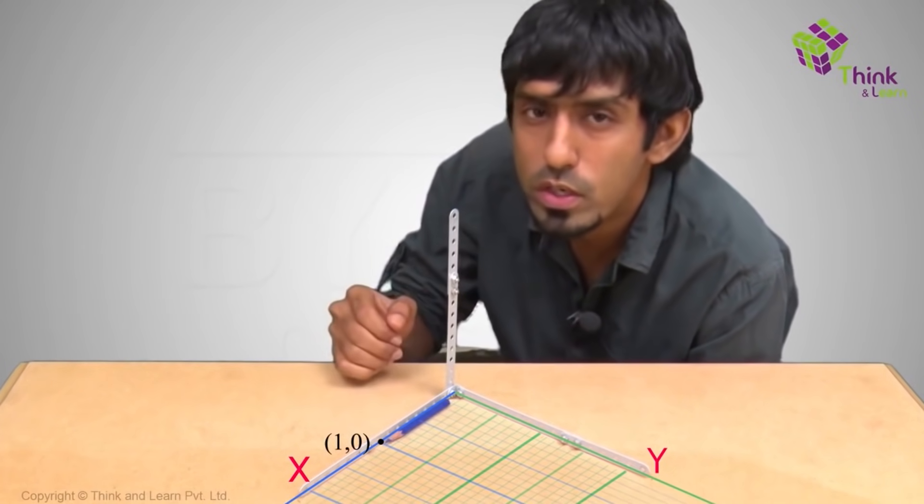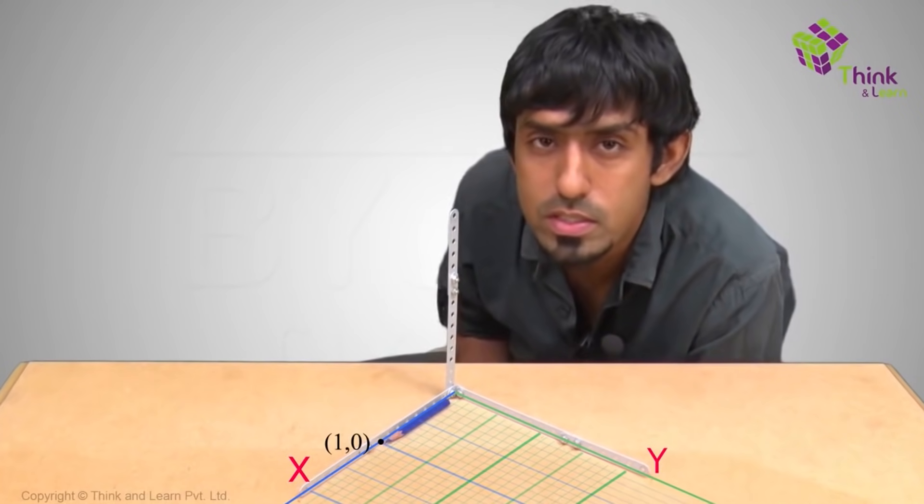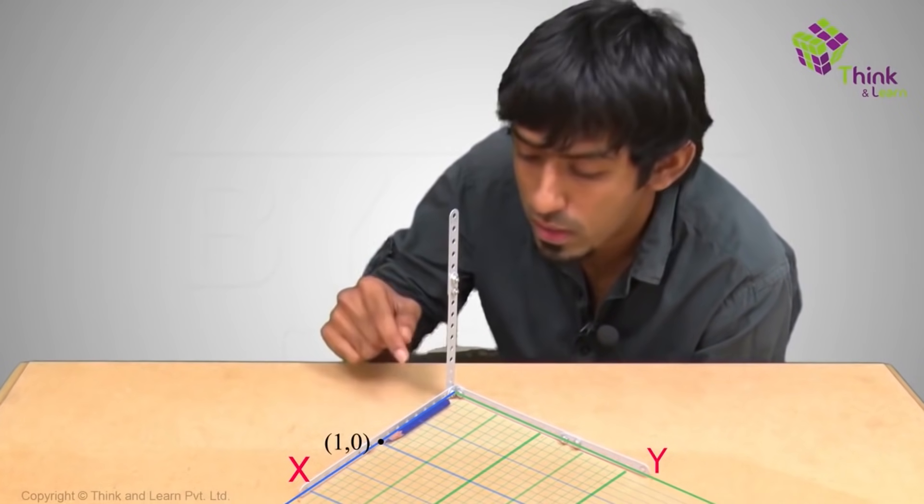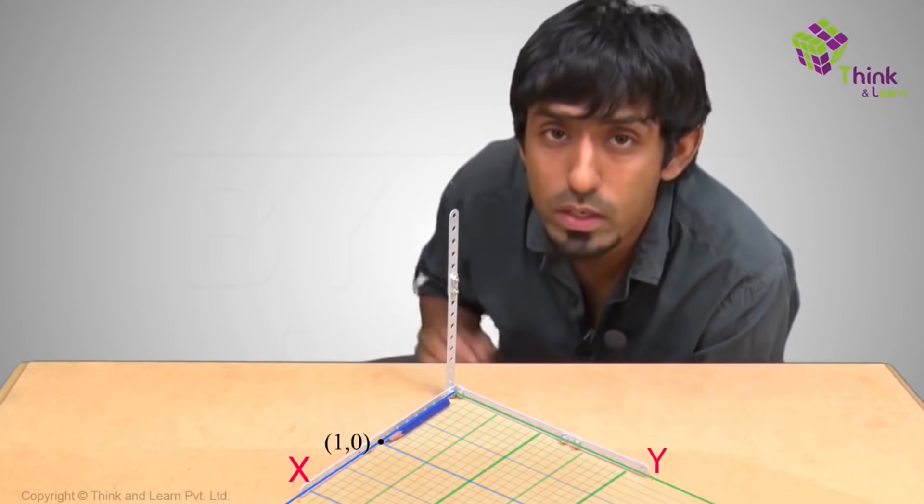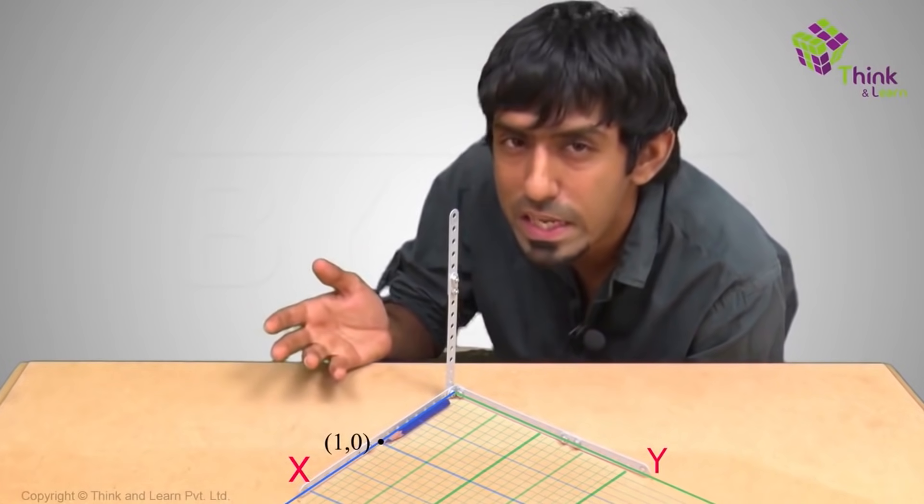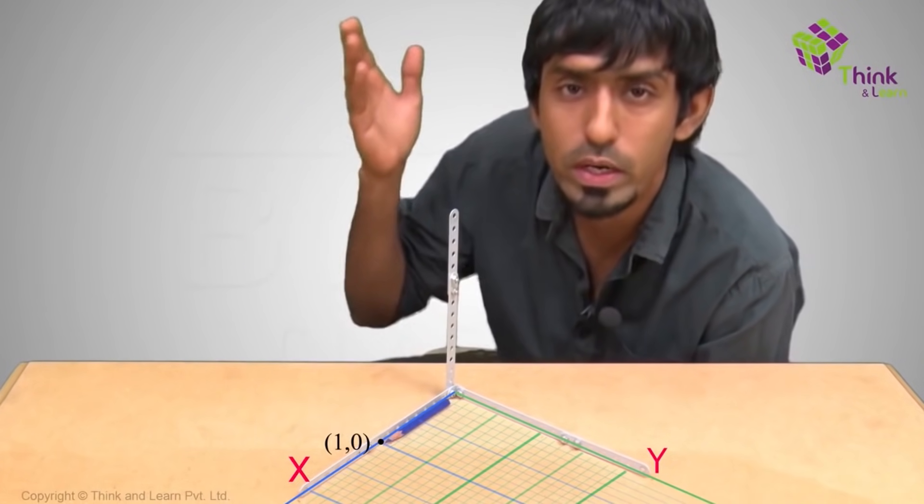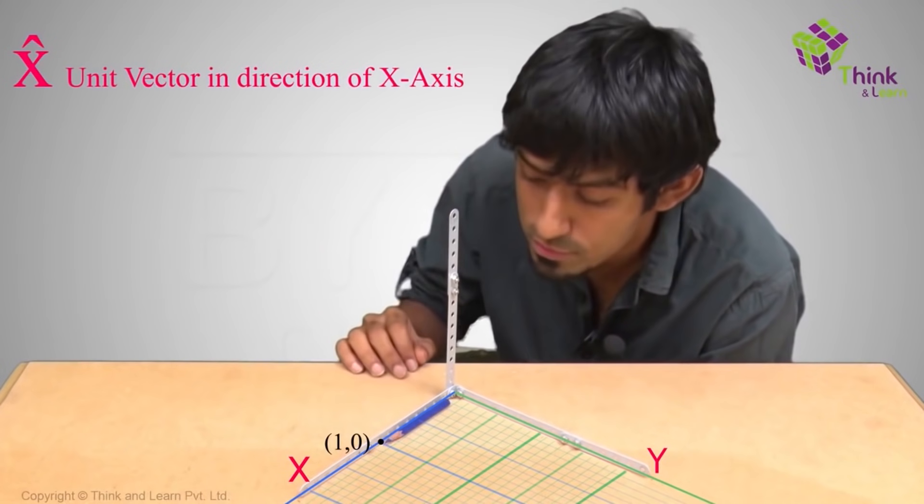So if I want to refer to 1, 0, I can refer to it as 1 into my vector, unit vector along x direction. I want to give it a name, so I'll call it x cap, just to say it's the unit vector pointing in the direction of x itself.